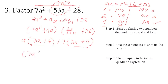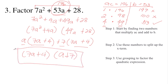Since 7A plus 4 is common, factor it out. The remaining terms are A and 7. Therefore the factors of 7A squared plus 53A plus 28 are (7A + 4)(A + 7). Check it using FOIL or any other method.